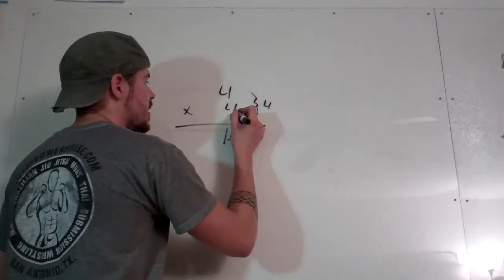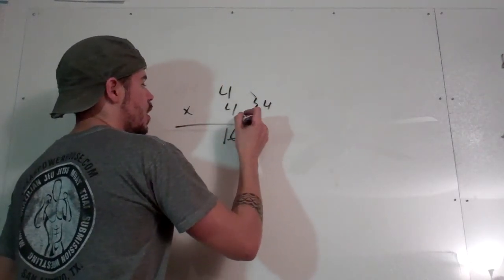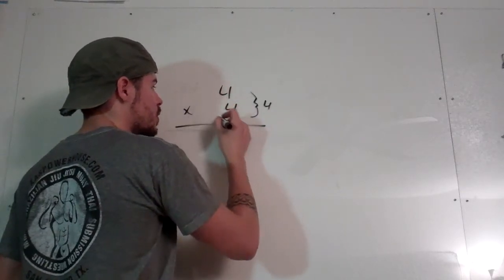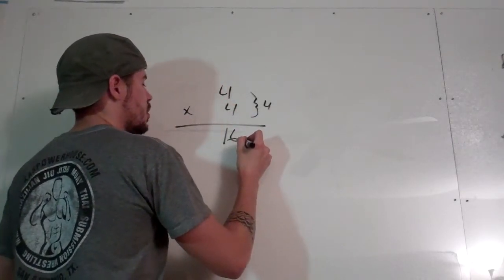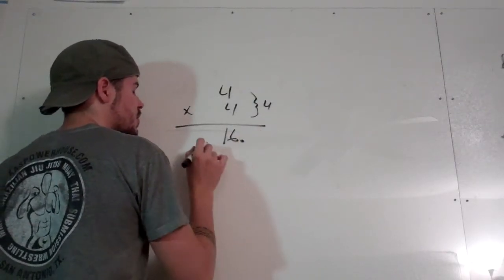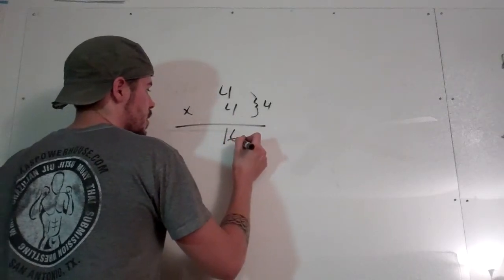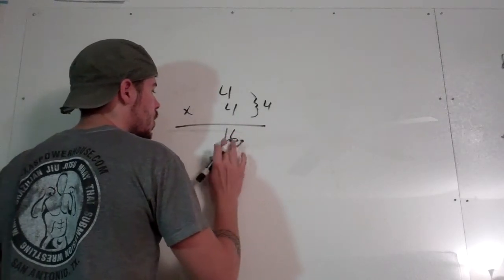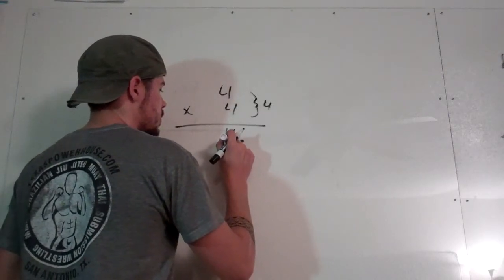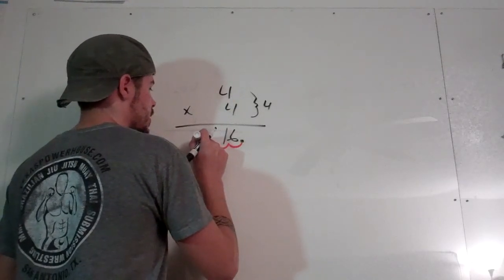So now what am I going to do? Well, I moved the decimal point over four times, and it was right here when I did that. And I'm going to move it back over four times. So I move it to the right four times, and I'm going to move it back to the left four times. So one, two, three, four.